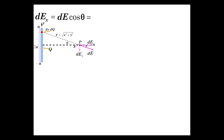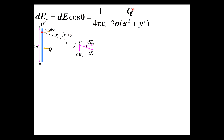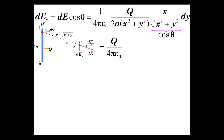Here again is a picture of the geometry of the situation. The differential electric field in the x direction is dE times cosine of theta. We computed dE and multiply it by cosine of theta, which is x over the square root of x squared plus y squared. You see x squared plus y squared to the first power multiplied by x squared plus y squared to the one-half power. Bringing them together, we get Q over 4 pi epsilon-zero times x dy over 2a times (x squared plus y squared) to the three-halves. That's our differential electric field in the x direction.